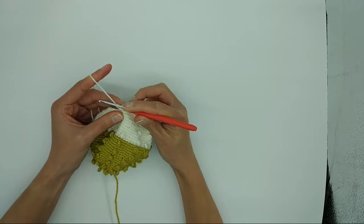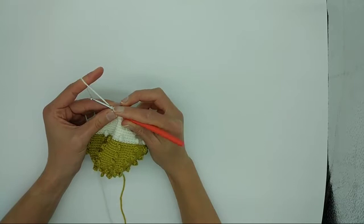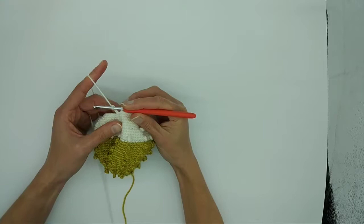Yarn over, pull through the first loop on the hook three times, yarn over, pull through the first loop on the hook four times.